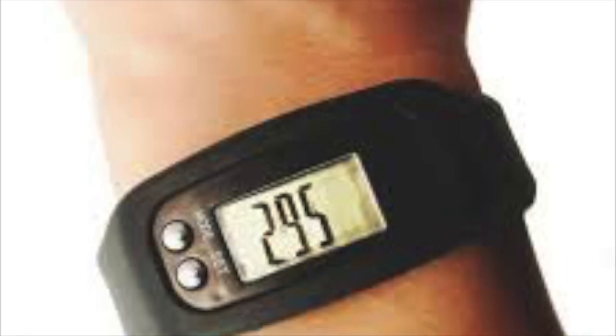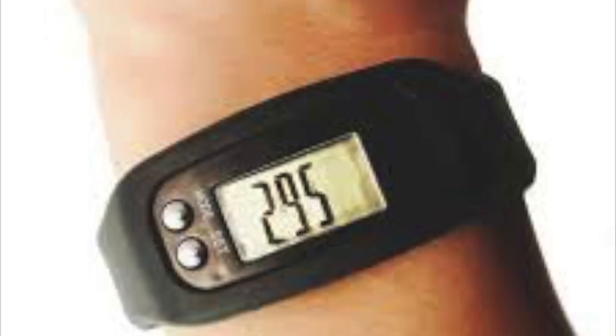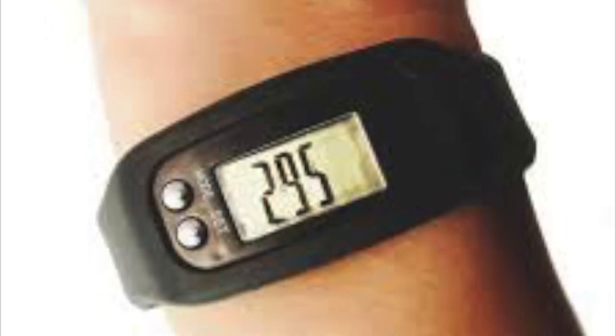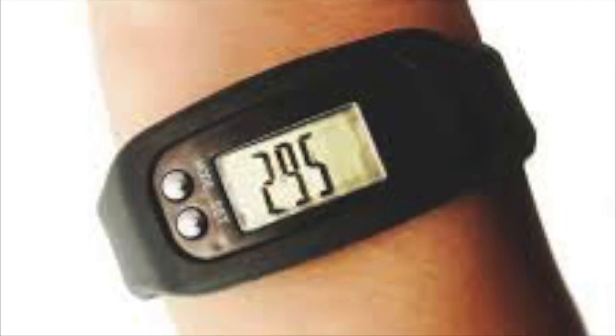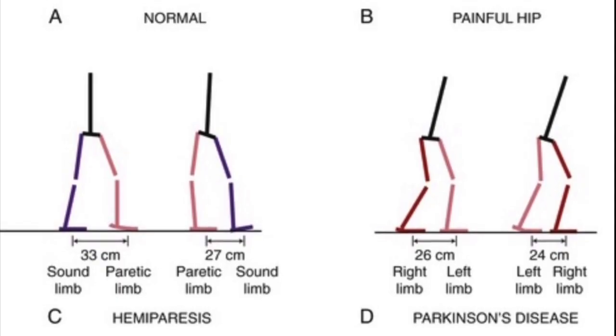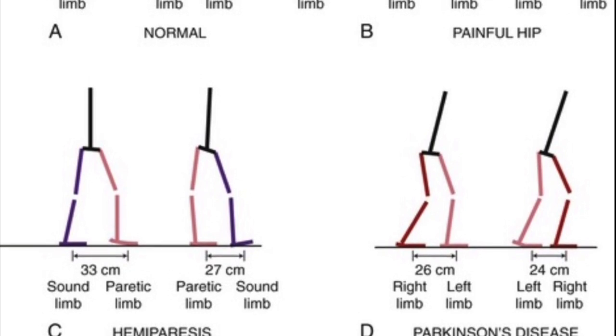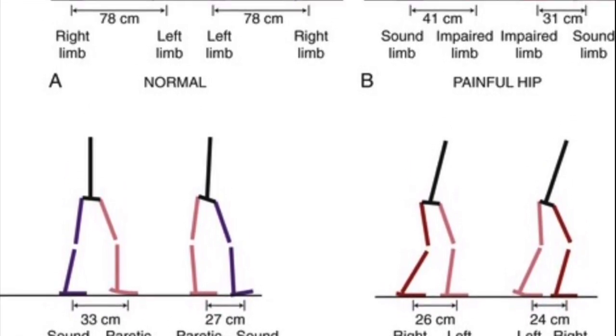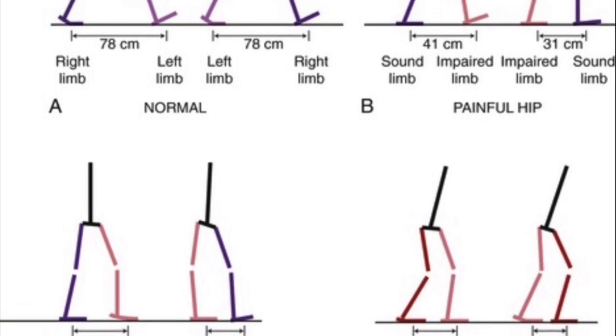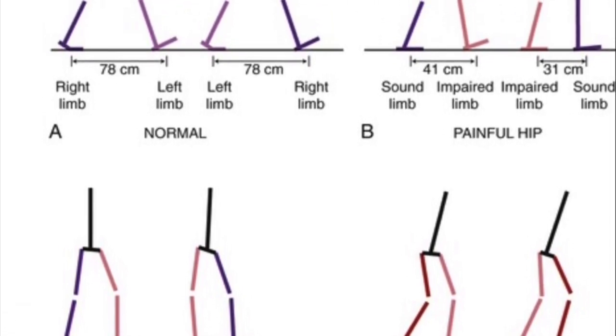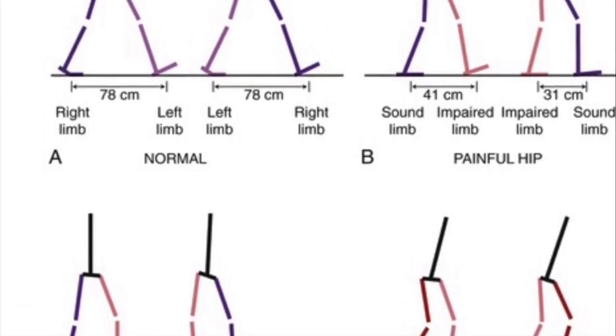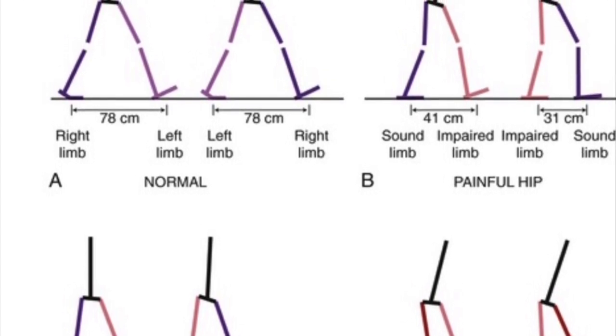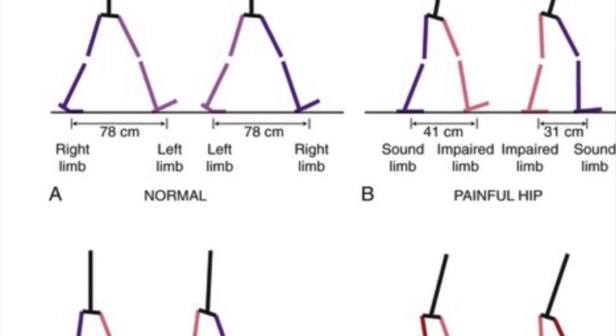Similarly, wrist pedometers can be used to differentiate between strides as they naturally swing with each step. While this cycle is similar to motion for every user, the duration and accelerations can vary greatly. For example, the step cycle of a runner and an elderly user will be very different. This requires the pedometer to be calibrated to each user as well as using running averages in the step calculations to adapt to changes in speed and stride length.